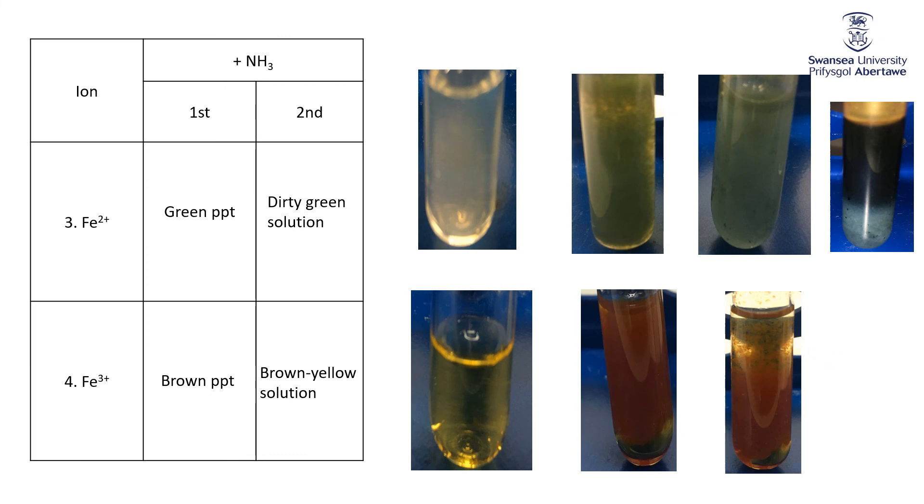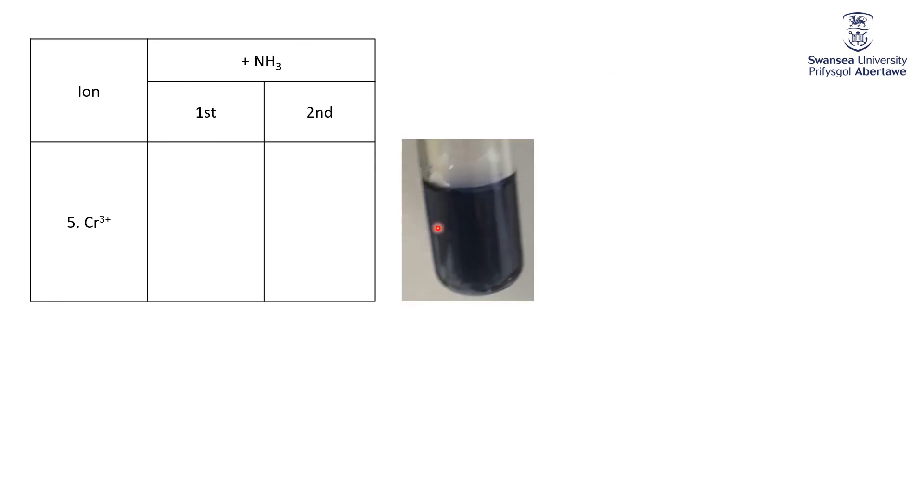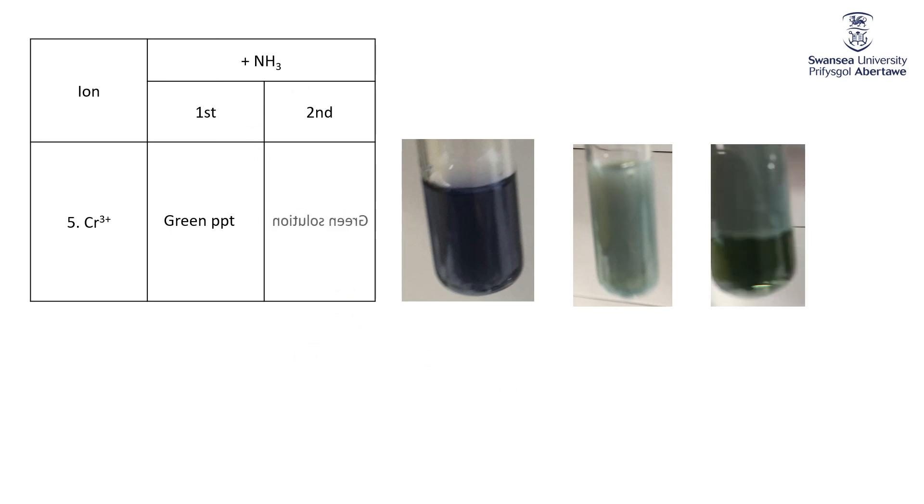So finally, chromium 3 plus starts off as that nice deep blue, some would call it purple solution. Add a little bit of ammonia, you get that yucky green precipitate, that's the chromium hydroxide. Now, if I kept adding hydroxide to it, remember this dissolves to give you a green solution. If I keep adding ammonia to it, it also dissolves to give you that glorious green solution there. But this is not the octahedral CrOH6 times 3 minus that we saw when we added hydroxide. This is actually a chromium that's got some ammonia complexed to it, as well as some residual waters complexed to it.